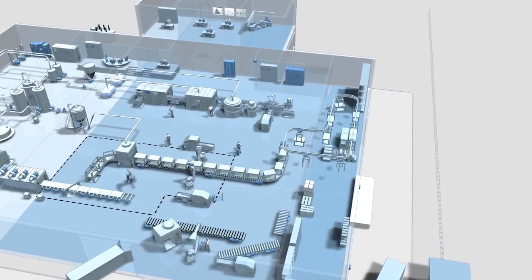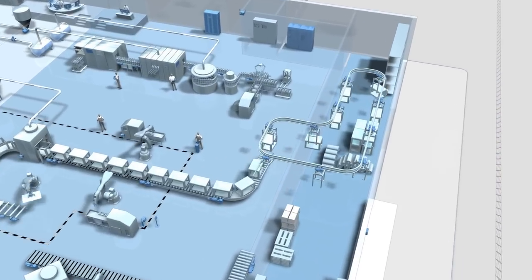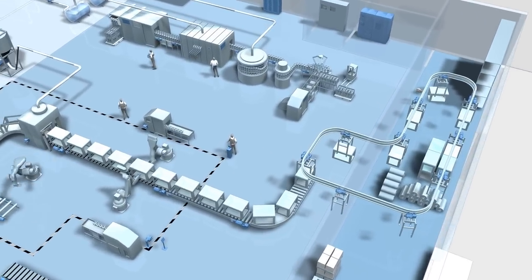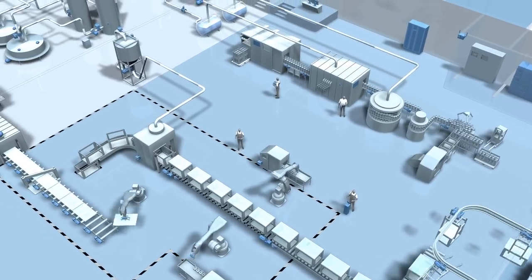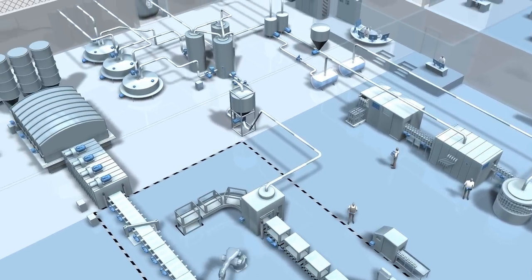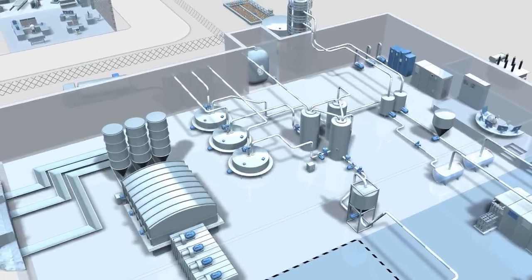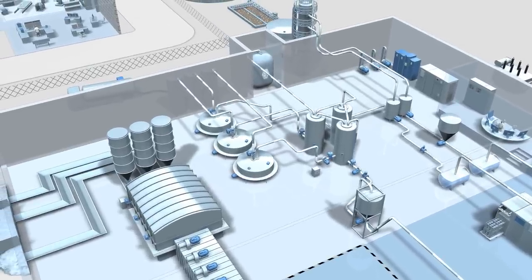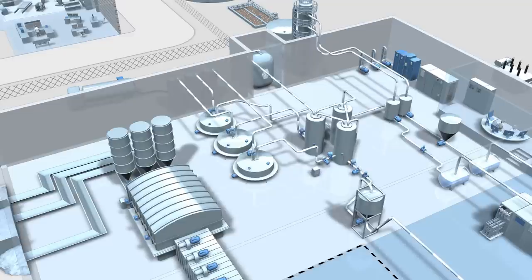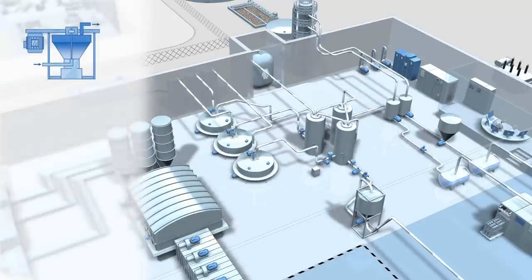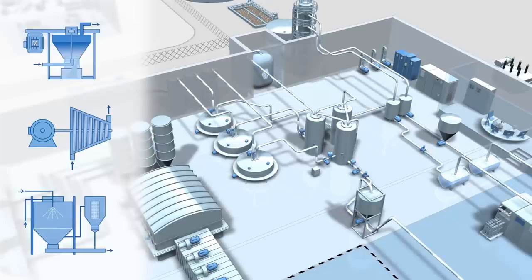A modern process plant today - such plants often have a modular design based on the building block principle, so to speak. The individual modules are completely autonomous units known as package units. Typical examples include centrifuges, compressors, or dryers.